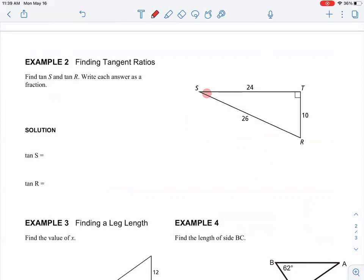And so my opposite is 10. Which one's the hypotenuse, 26 or 24? 26, good. 26 is the hypotenuse, which means 24 is the adjacent. So for the tangent of S, the opposite is 10, and the adjacent is 24.